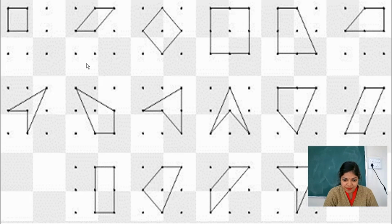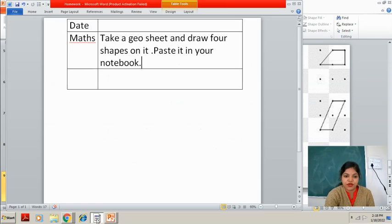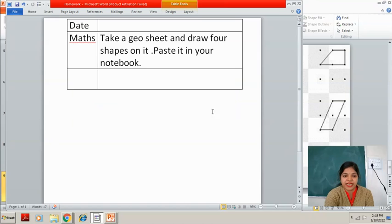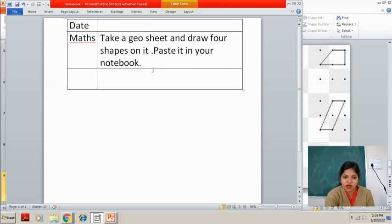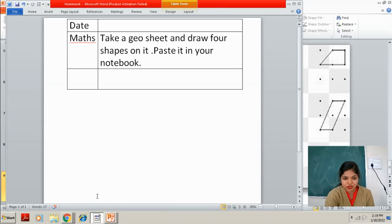I hope you understand the topic. Now take out your diaries and write down the homework: take a geosheet and draw 4 shapes on it, then paste it in your notebook. Have you written the homework? Good. Okay students, bye. Have a nice day.